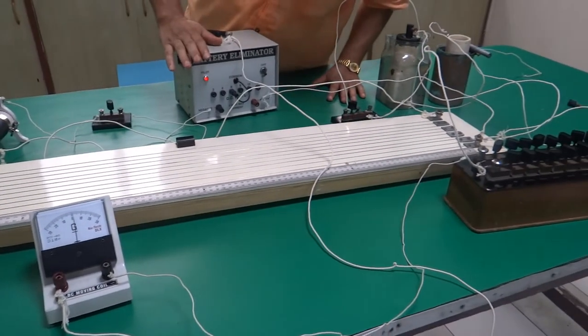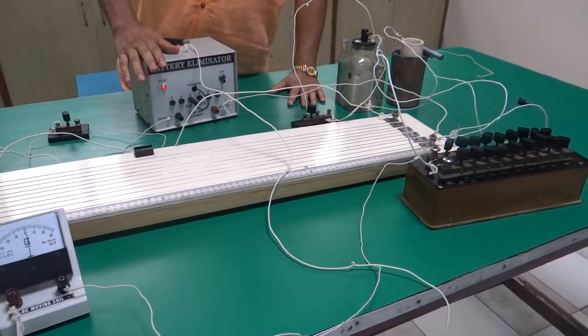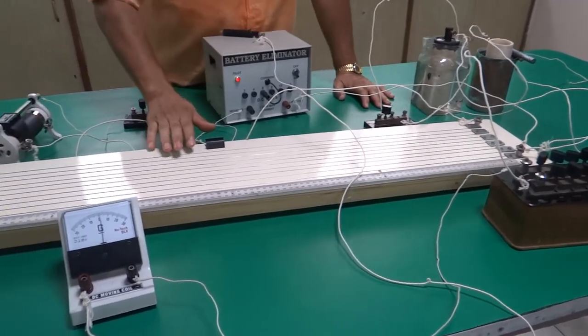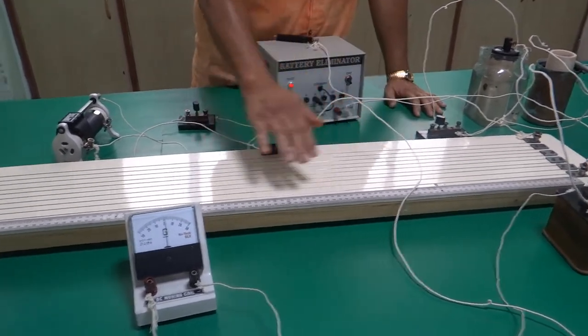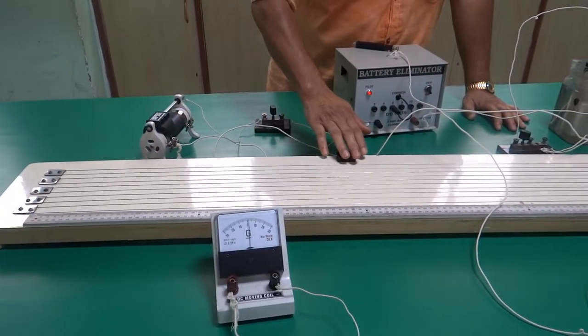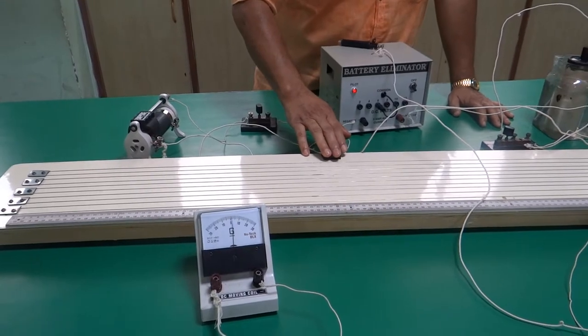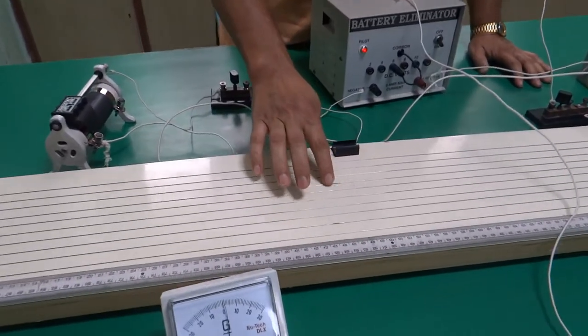This is an experimental arrangement for comparing EMF of two cells using a potentiometer. You can see this is the potentiometer. In a normal potentiometer, we have 8 to 10 turns of wire.